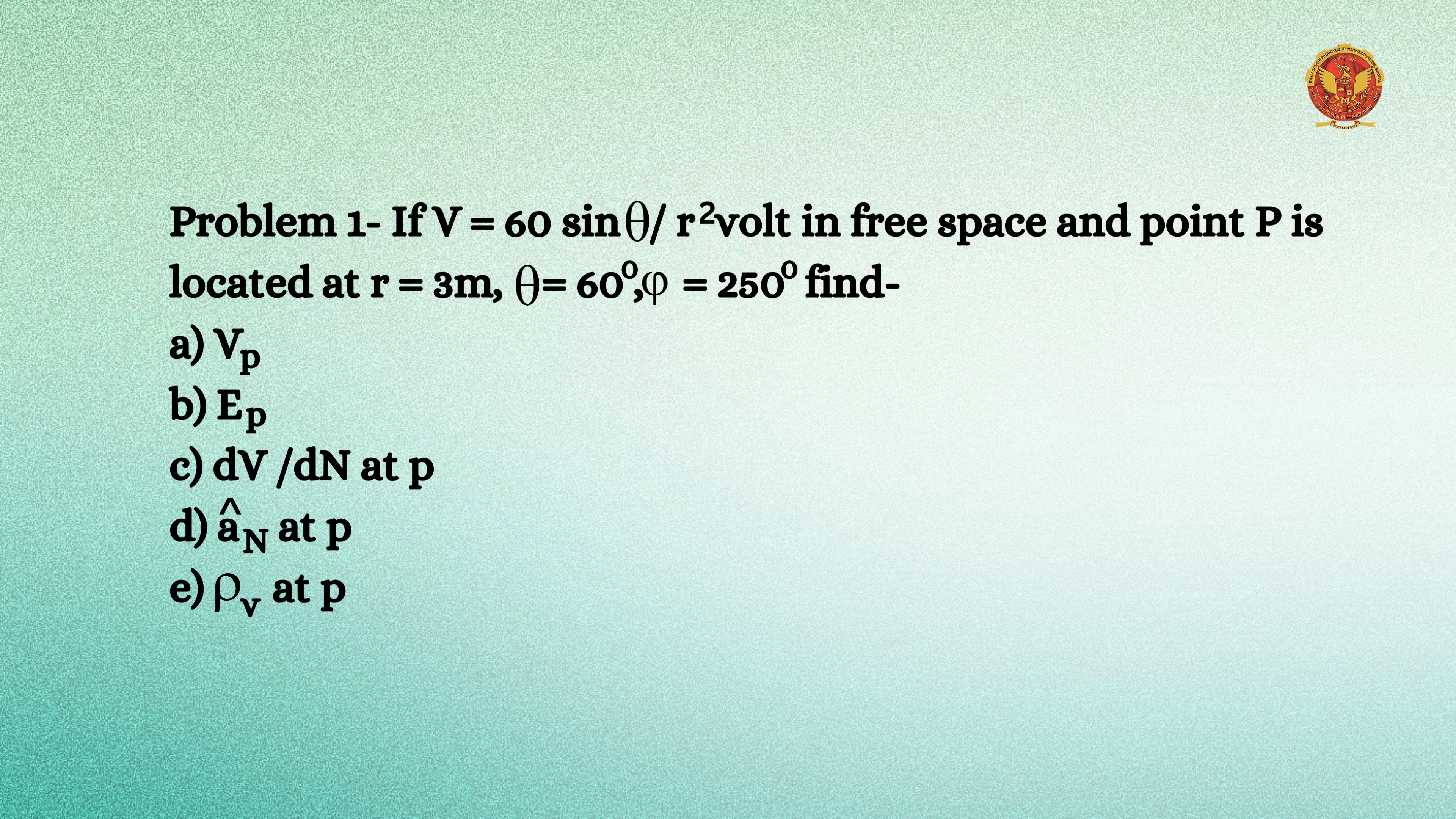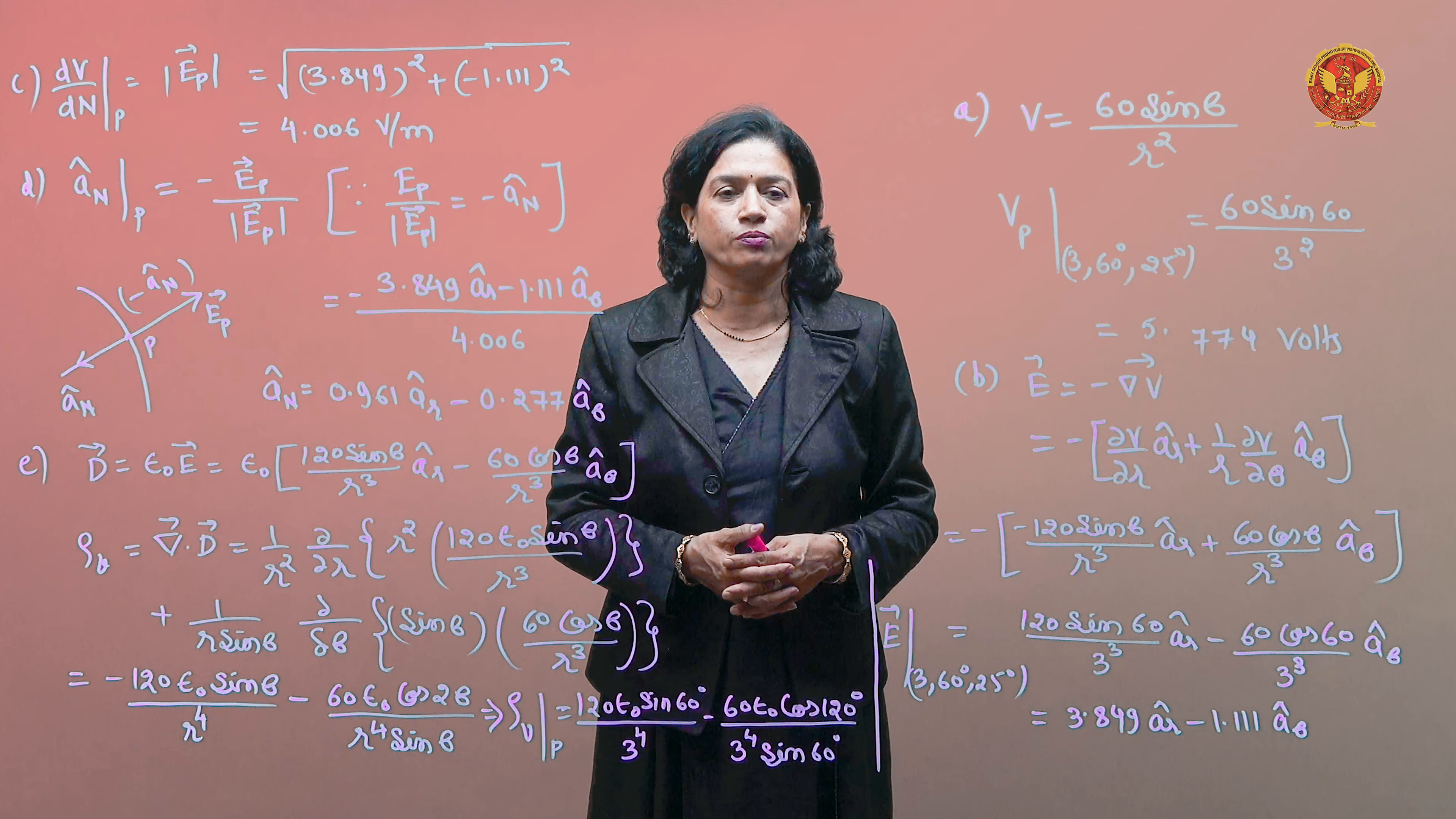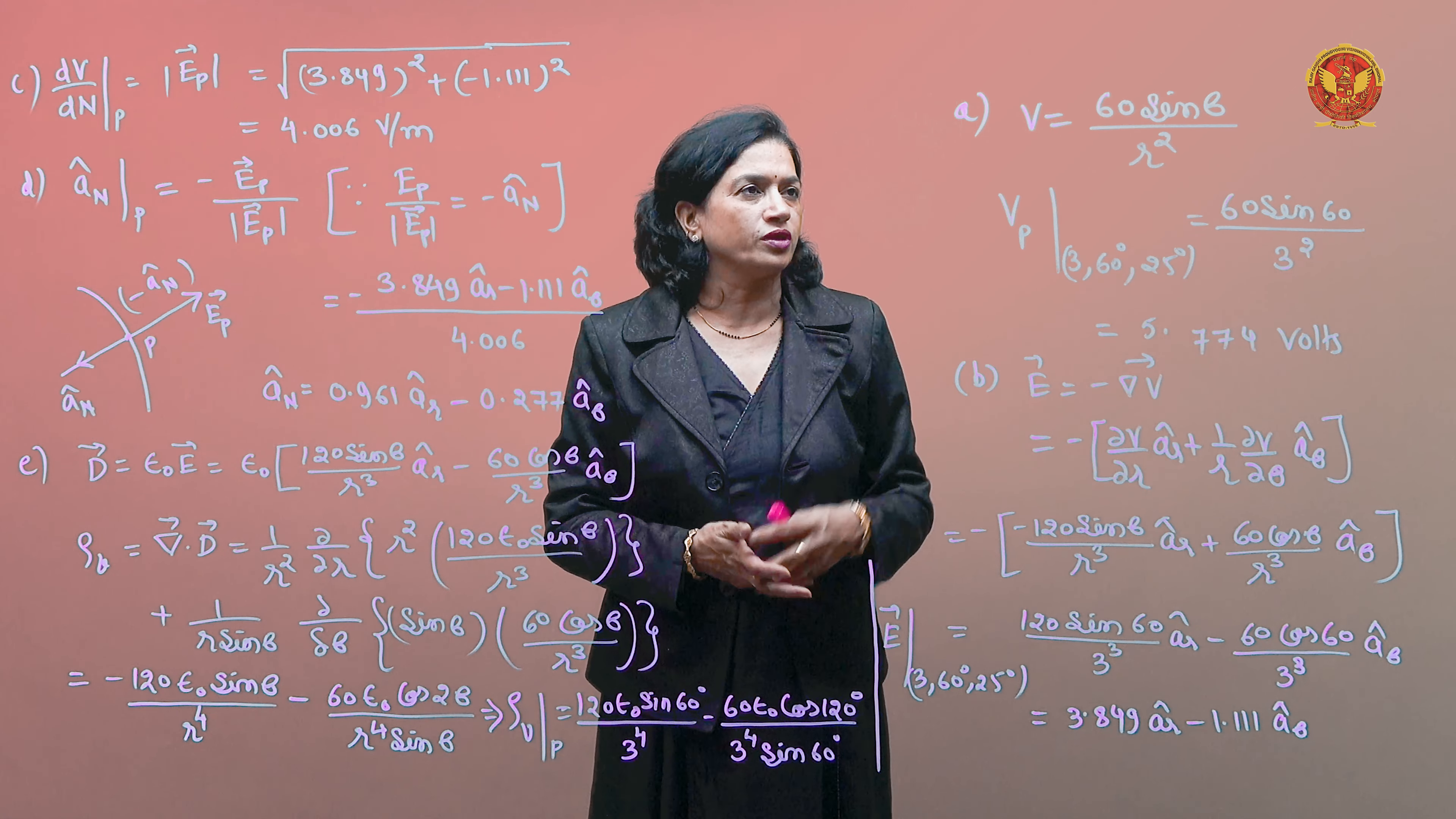Find: a) potential at P point, b) electric field at P point, c) dV by dn maximum potential gradient at P, d) the normal vector at P, and e) rho v at P. So we have to find all these elements. So let's start.